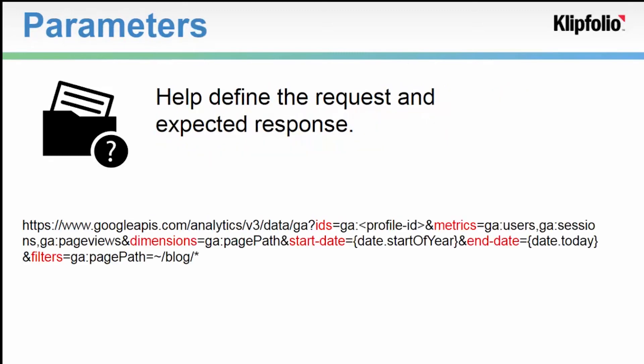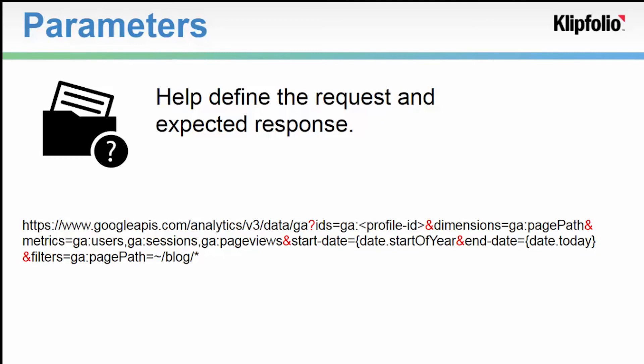We can refine our query by adding parameters. Parameters are useful for filtering data for a certain time range, sorting data, or pulling a certain number of data points — it all depends on the specific API. In this case, for Google Analytics, you can see that I'm pulling the number of users, sessions, and page views by page path. I'm only retrieving results between a certain start and end date, and I'm filtering the data to only page paths that contain the word blog. You can spot parameters in a query by looking for the question mark; all following parameters are separated using an ampersand.